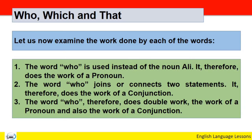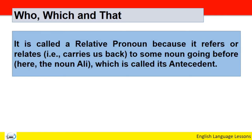Who نے pronoun ہوتے ہوئے دو sentences کو join کرنے کا کام کیا، لہٰذا اس کا کام conjunction کا بھی ہوا۔ The word 'who' therefore does double work — the work of a pronoun and also the work of a conjunction. یہاں پہ who نے double کام کیا۔ It is called a relative pronoun because it refers or relates back to some noun going before — here the noun 'Ali', which is called its antecedent. لہٰذا who, which, اور that کو ہم relative pronoun کہتے ہیں کیونکہ یہ اس noun کی طرف واپس لے جاتے ہیں۔